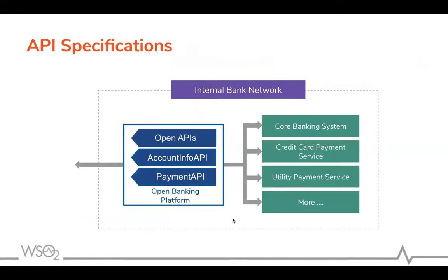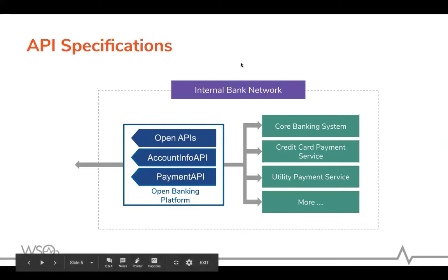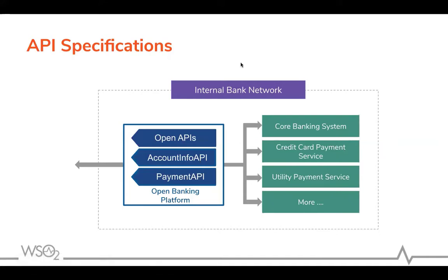I will go through each requirement one by one, taking examples from different regions and showing how the WSO2 open banking solution addresses these requirements. The first thing is that we should have a proper API specification to expose data to the outside. When defining APIs, there can be open APIs as well as secure APIs.